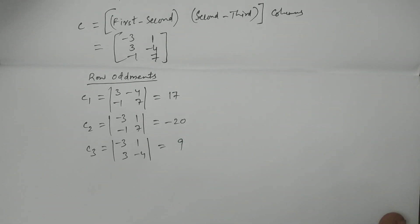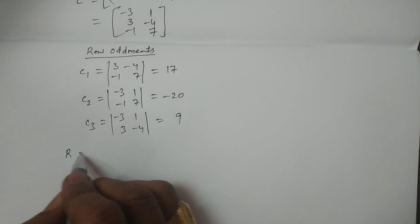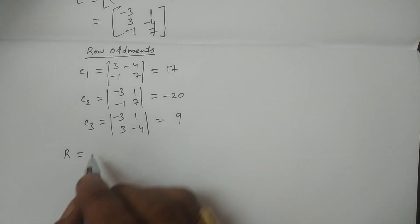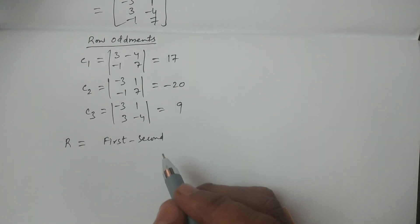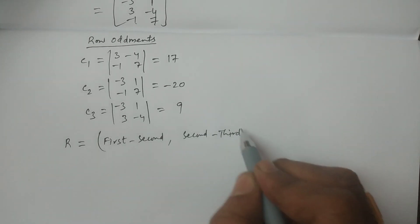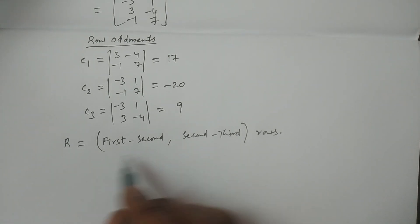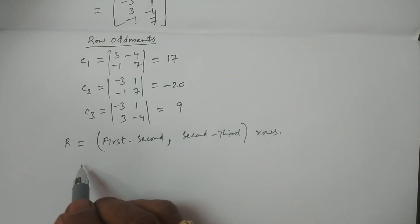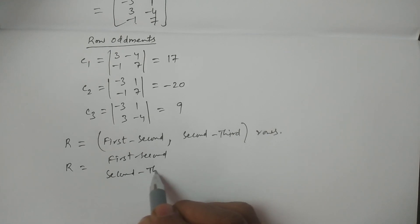So these are the row oddments. Now you have to calculate a new matrix called R. R is obtained by taking first minus second row, and second minus third row of the original matrix A.